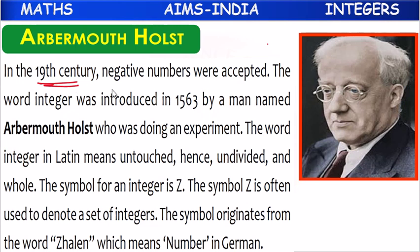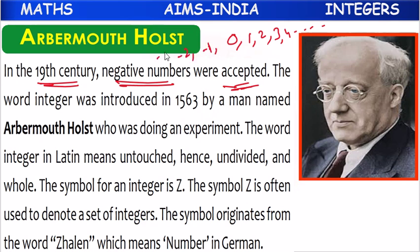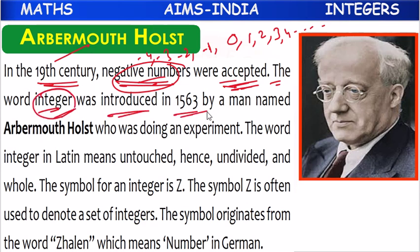In the 19th century, negative numbers were accepted. Integers means — already we know — along with zero, we have positive numbers, positive integers on the right-hand side, and negative integers on the left-hand side. The word 'integer' was first introduced in 1563 by a man named Arbor Mouth Holst, who found about integers while doing an experiment.